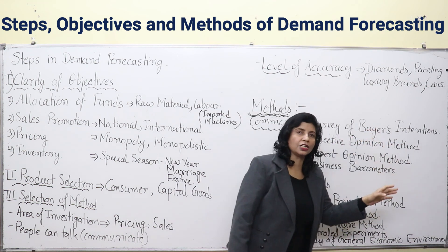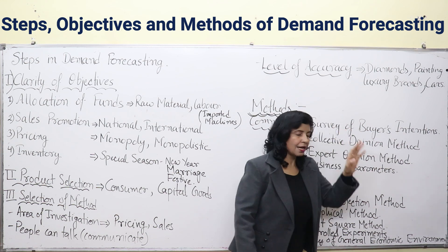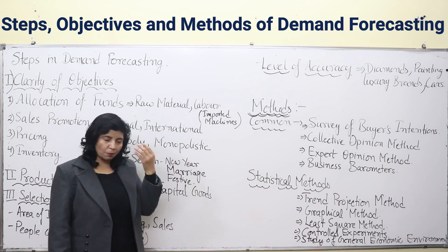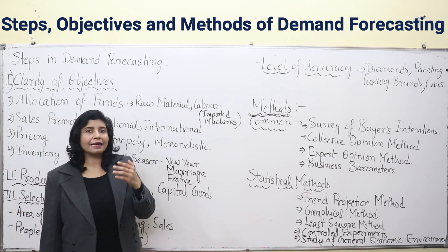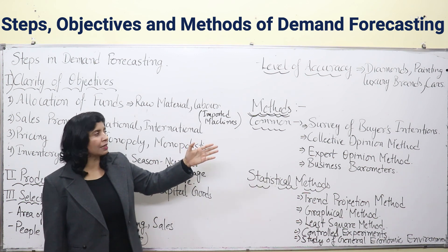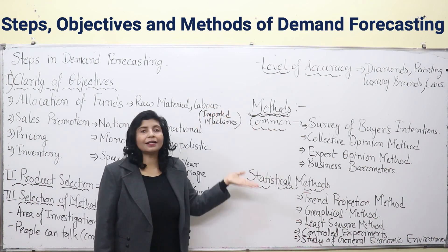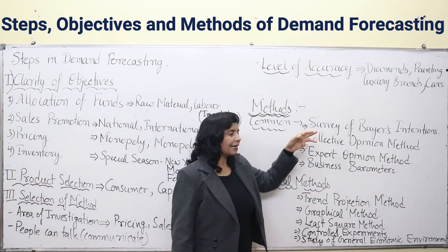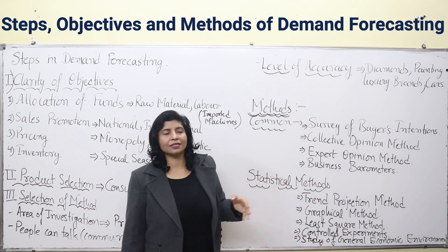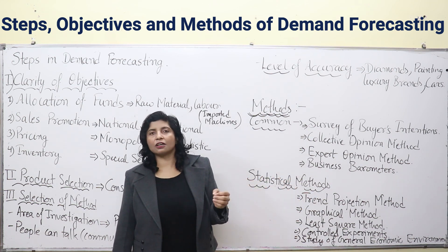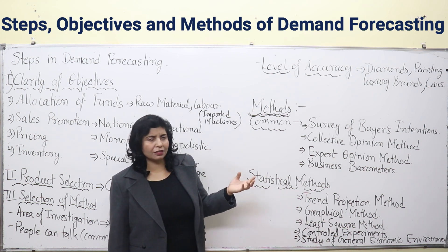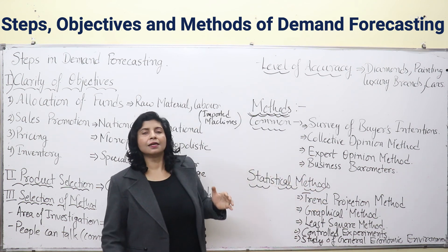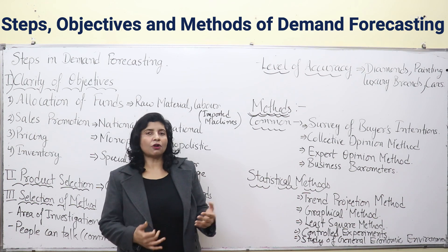The first common method is survey of buyers' intentions. Here, you survey buyers — the consumers who are consuming or about to buy a commodity — because the consumer is king. A king can tell you better what he will be buying in coming months or the coming year. So if you have any type of commodity — FMCG goods, cars, bikes, refrigerators — you can directly contact your consumers, get inferences from them, tabulate the data, and draw interpretations.